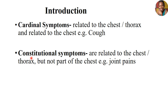However, there are signs or symptoms that a patient can display that may not be directly relating to the respiratory system, but they are actually displaying a condition that is pulmonary related. These symptoms we call constitutional symptoms. We say these are symptoms relating to the chest and the thorax, but they are not part of the chest — symptoms related to the chest or thorax or the pulmonary system, but not originating from the chest itself.